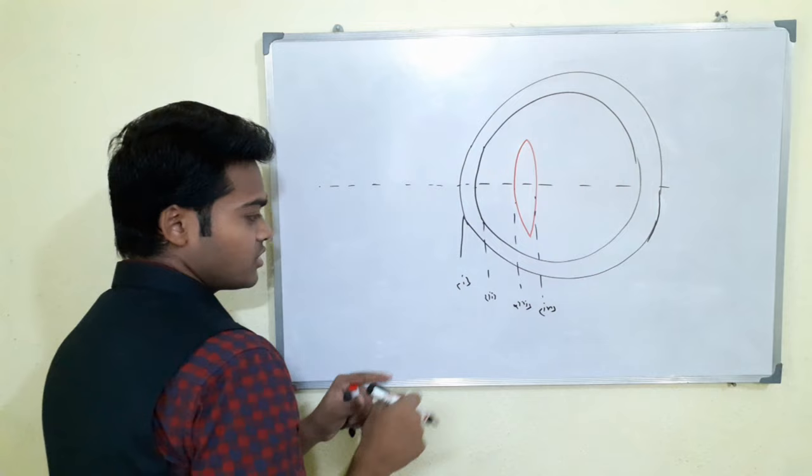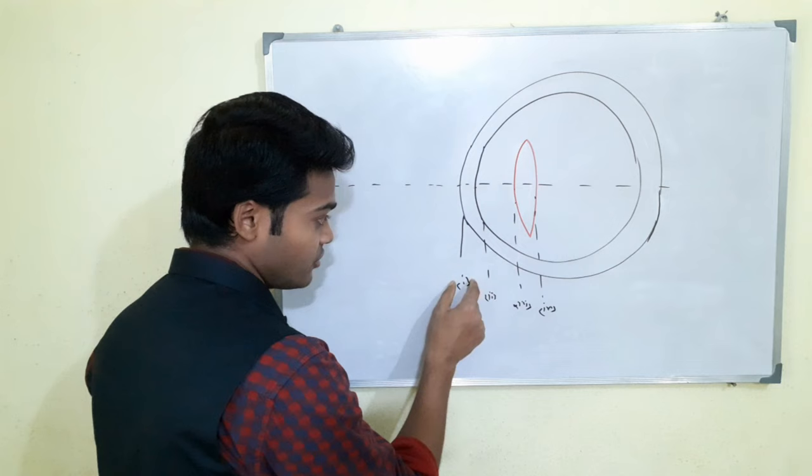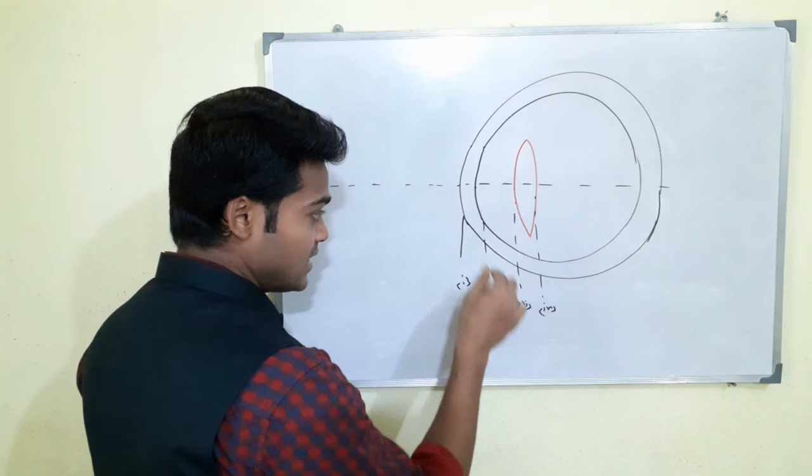Now what is the conclusion? The corneal anterior surface forms the first Purkinje or catoptric image, second by the corneal posterior surface, lens anterior surface participates in forming the third, and the posterior surface forms the fourth.